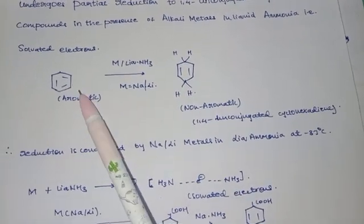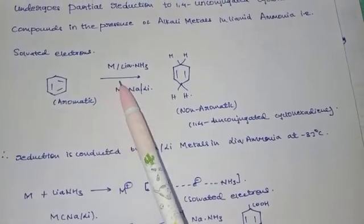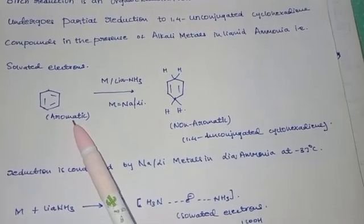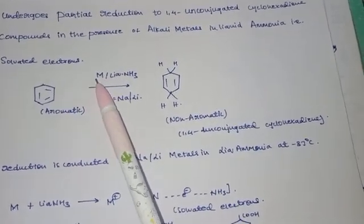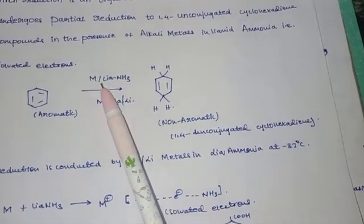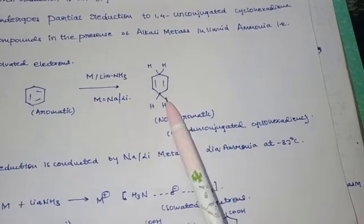These are solvated electrons. See, this is an aromatic compound undergoing reduction, that is gain of electrons. Here, metal M means metal such as sodium or lithium in liquid ammonia.